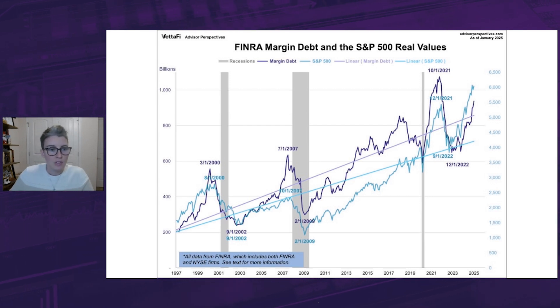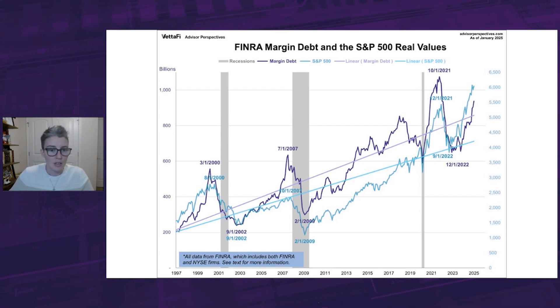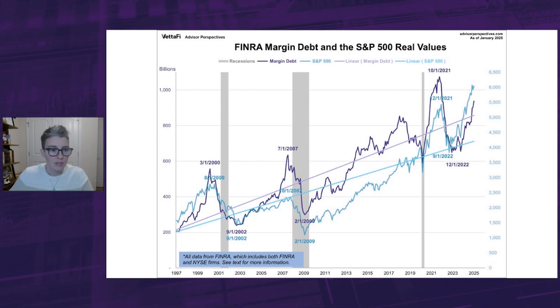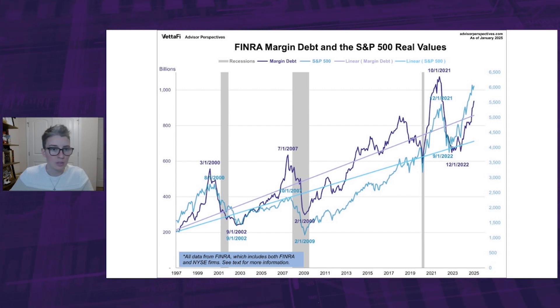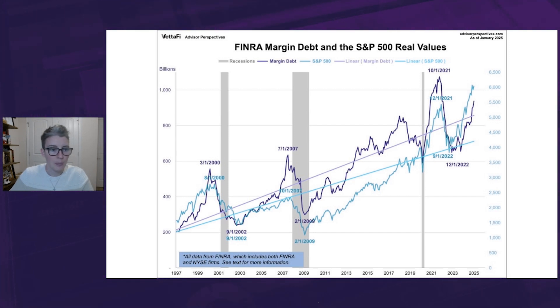So first, let's take a look at the relationship between margin debt and the market, using the S&P 500 as a surrogate for the latter. This first chart here shows the two series in real terms, meaning they're adjusted for inflation using CPI as the deflator.